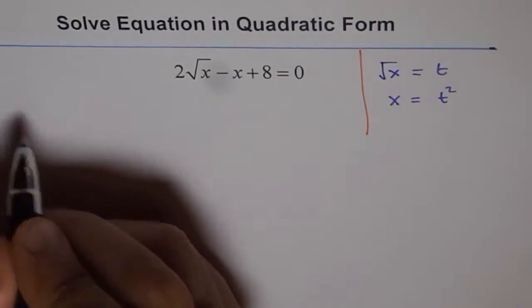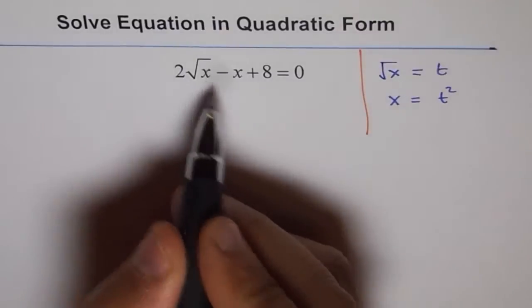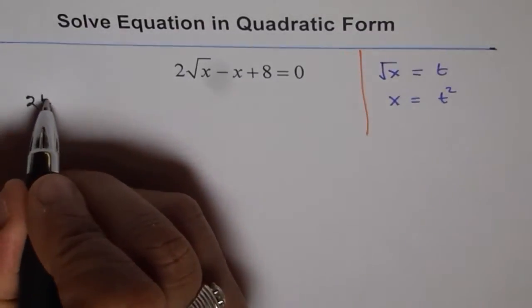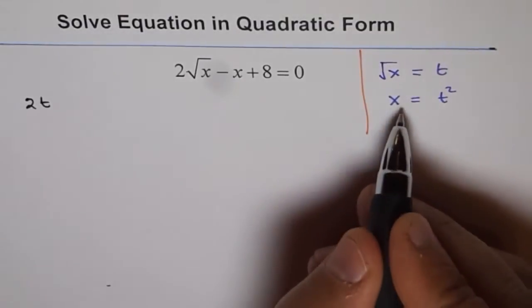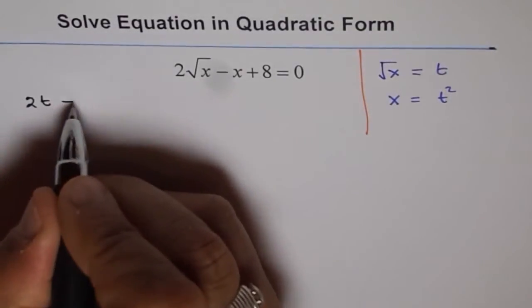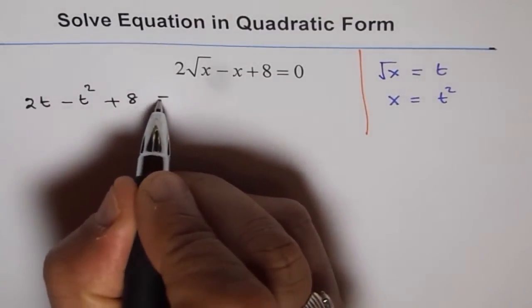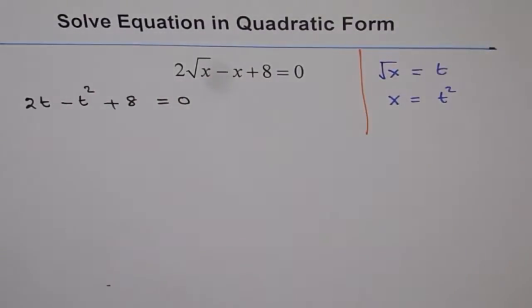So the equation gets modified and we can write 2 square root x as 2t, right? So it will be 2t minus x means minus t squared. Minus t squared plus 8 equals to 0. Plus 8 equals to 0. So that's what we get.